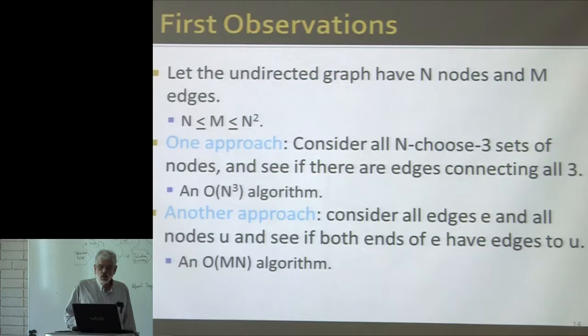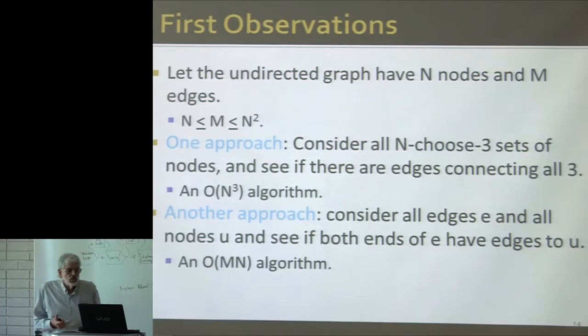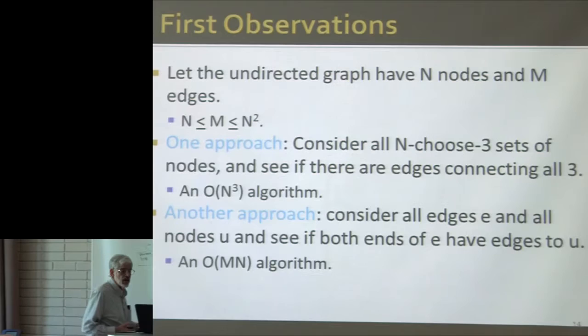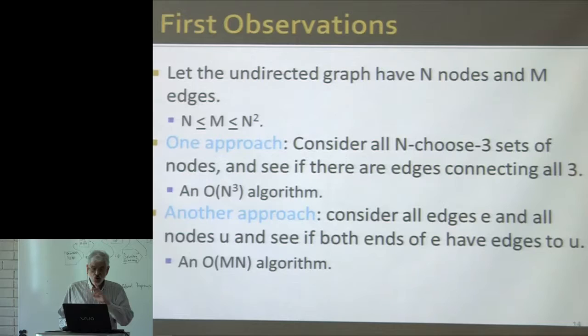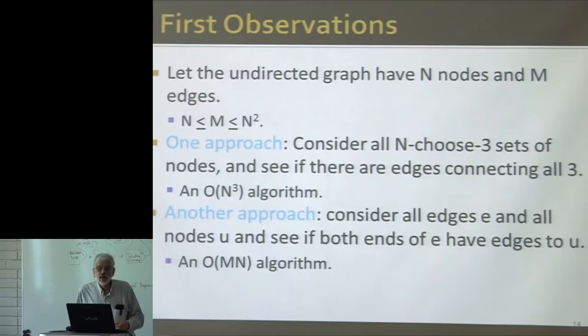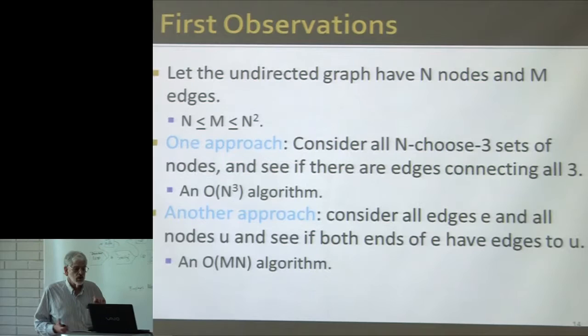A slightly better approach is to consider each of the m edges, and then consider all nodes other than the two endpoints of that edge — that's order n different nodes — and see if node u has connections to both ends of the edge. If I've set up the right data structures, I can answer those questions in order one time each. So this gives me an order m times n algorithm, which can't be worse and could be better than considering all sets of three nodes, because m can't be bigger than n squared.